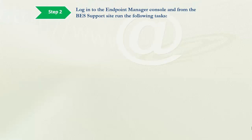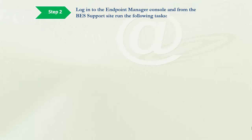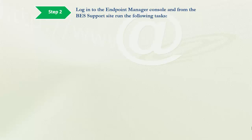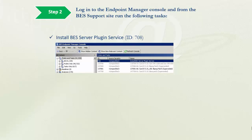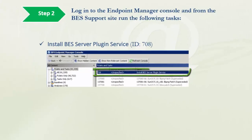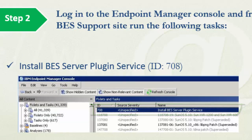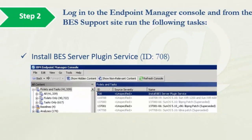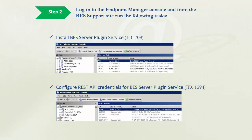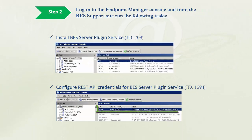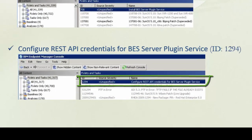Step 2. Log into the Endpoint Manager console and from the Best Support site, run the following tasks: Install Best Server plugin service, and configure REST API credentials for Best Server plugin service.